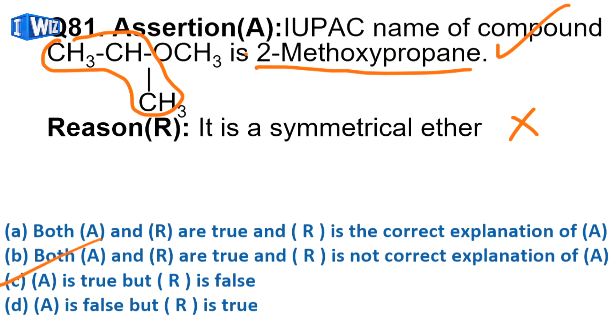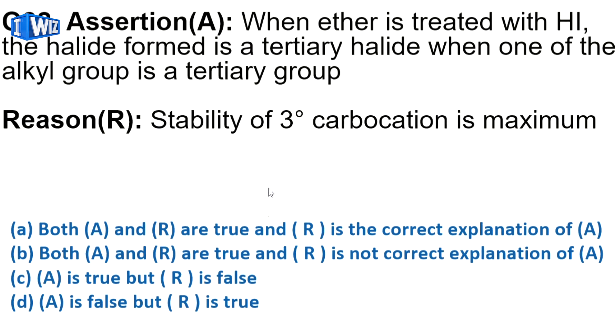When ether is treated with HI, the halide formed is tertiary halide when one of the alkyl groups is tertiary. When you treat ether with HI, the halide formed is tertiary if there's a tertiary group on one side. Very true.